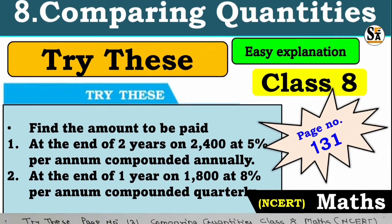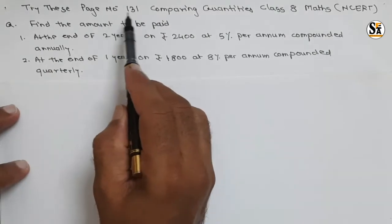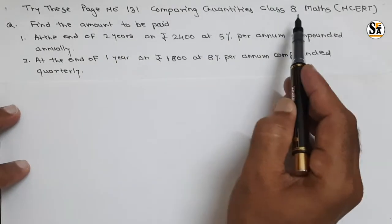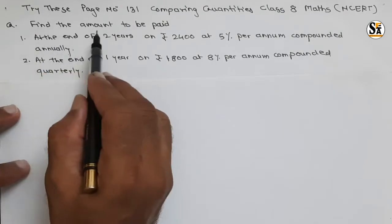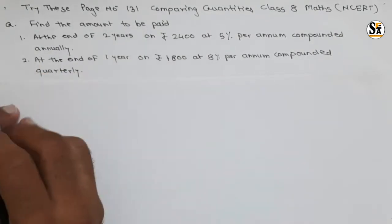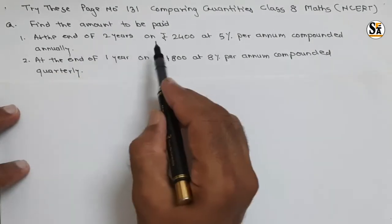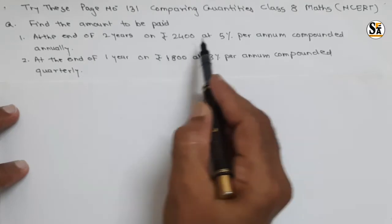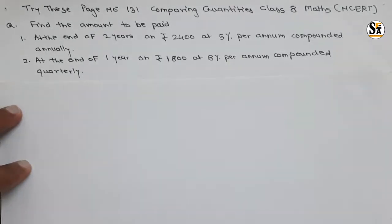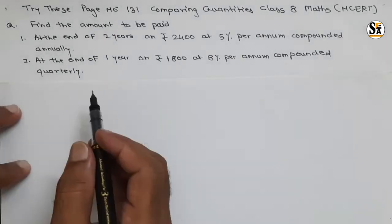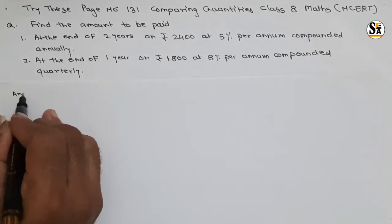See the question under the 'Try This' section, page number 131, Comparing Quantities, Class 8 Mathematics. The question is: find the amount to be paid. First, at the end of two years on rupees 2400 at five percent per annum compounded annually. There is a second one also - let's see the first one.